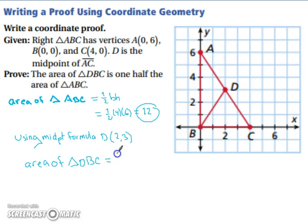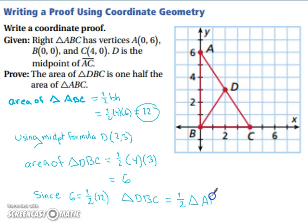So since D is at the coordinate of 2, 3, we can use the same idea for the area of triangle DBC. We can utilize 1 half, our base, which is 4, and the height, which is 3, and that gives us 6. And 6 is in fact half of 12. So since 6 equals 1 half of 12, triangle DBC equals 1 half the area of triangle ABC.